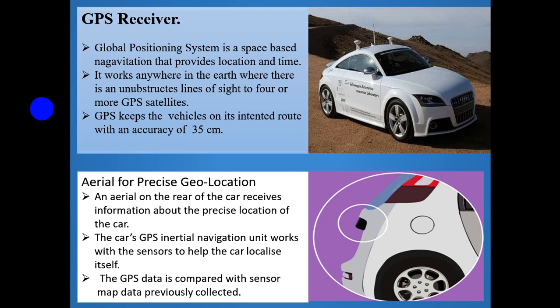Aerial for Precise Geolocation. An aerial on the rear of the car receives information about the precise geolocation of the car. The car's GPS internal navigation unit works with sensors to help the car localize itself. The GPS data is compared with the sensor map data previously collected.